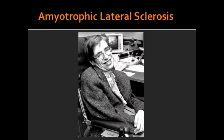Describe how ALS progresses in a patient. ALS commonly presents as fasciculations with eventual atrophy. It is a condition that is progressive and fatal.